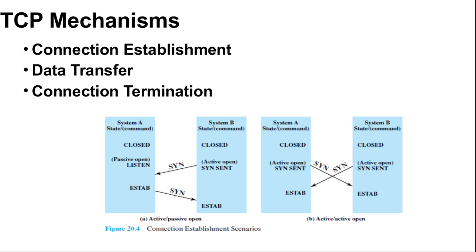Next we go to TCP mechanism. You can see connection establishment, data transfer, and connection termination, with a diagram showing connection establishment scenarios as already discussed in a previous video. There are two-way or three-way handshake scenarios, with active and passive open, and active and active open. TCP mechanism falls into the categories of connection establishment, data transfer, and connection termination. Connection establishment in TCP always uses a three-way handshake.